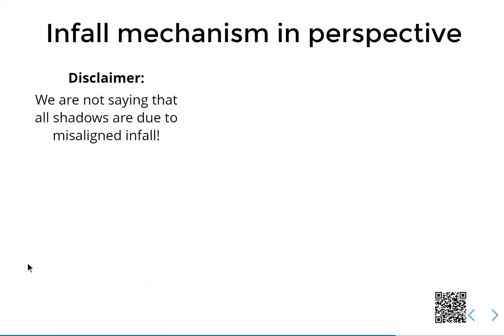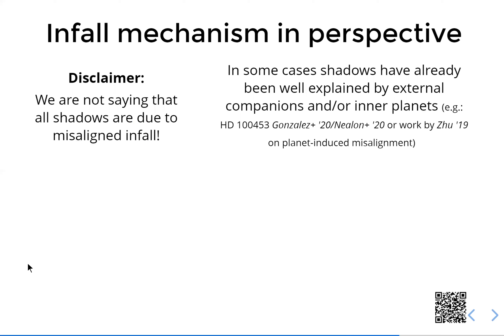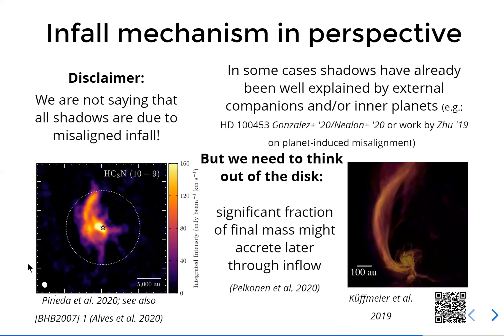I think it is also important to be open-minded here — let me put a disclaimer: we are not saying that all shadows are due to misaligned infall. In fact, there have been recent papers that nicely explain individual systems through interaction with inner or outer companions. But altogether, I think it is really important that we think outside the disk, as we have more and more evidence and more observations of infall events — mainly through streamers — and papers looking at different tracers, especially gas, showing larger extended structures that clearly hint at the feeding of the forming star-disk system.